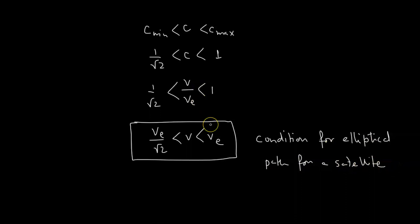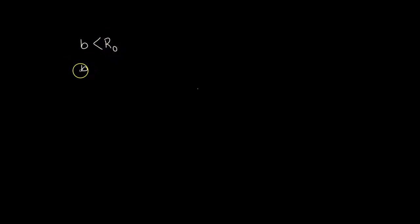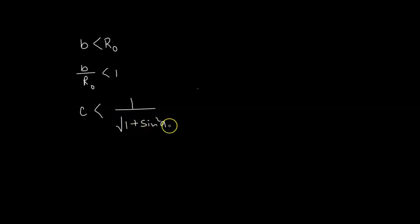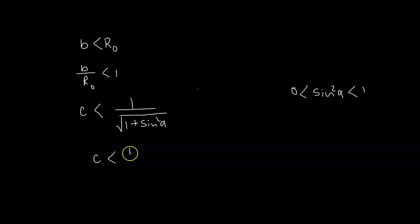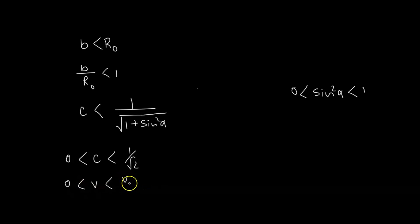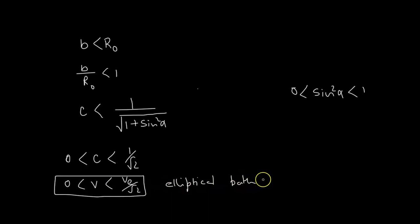Similarly, for a ballistic missile, B < R₀ gives B/R₀ < 1, so C < 1/√(1 + sin²α). Using the range of sin²α between 0 and 1, the velocity must satisfy 0 < V < V_e/√2. This is the condition for an elliptical path for a ballistic missile.